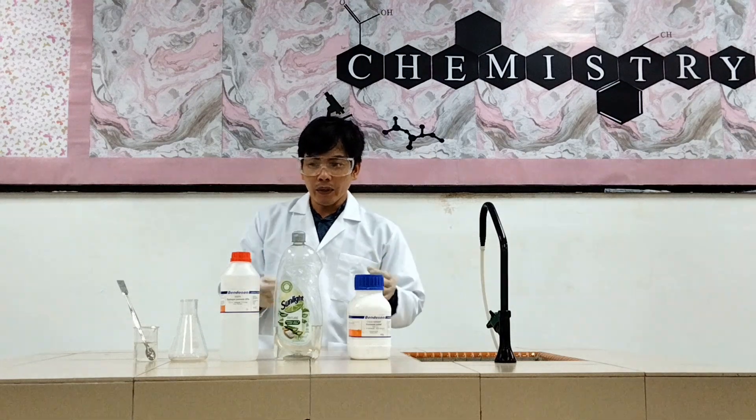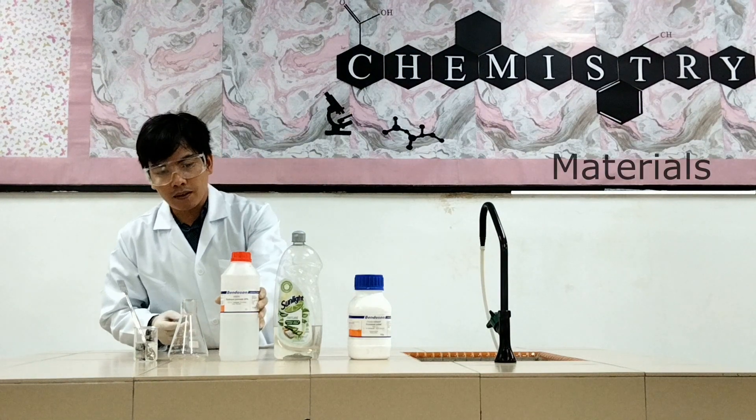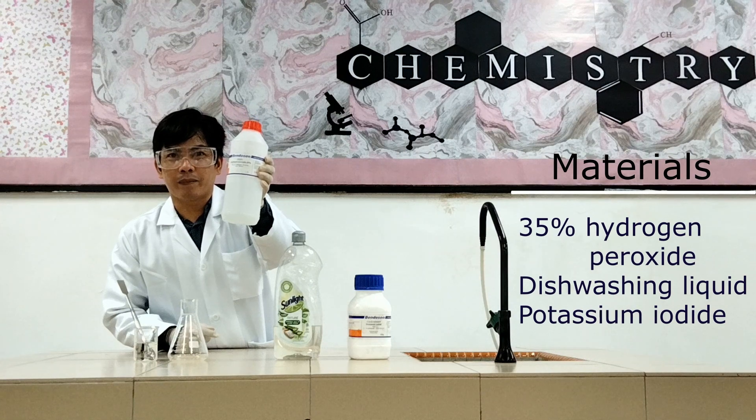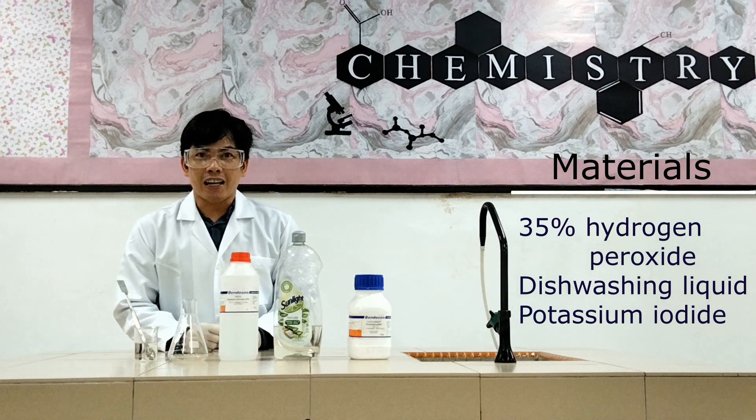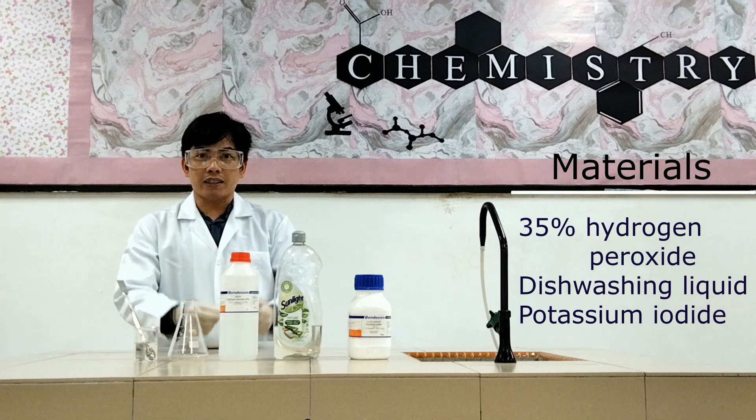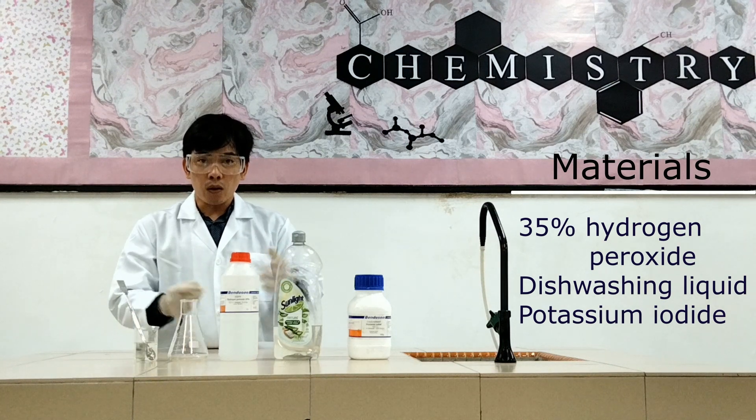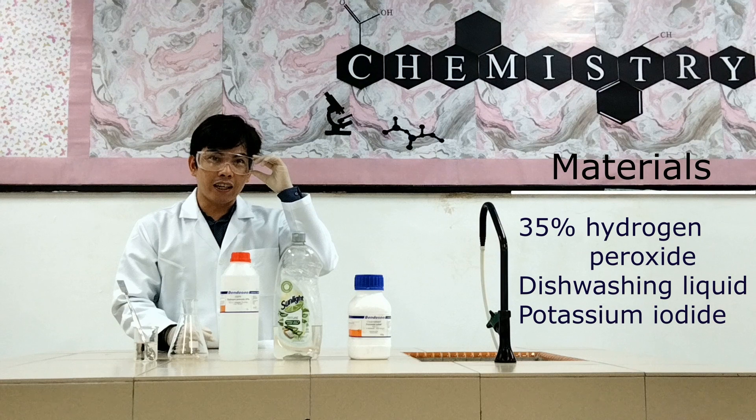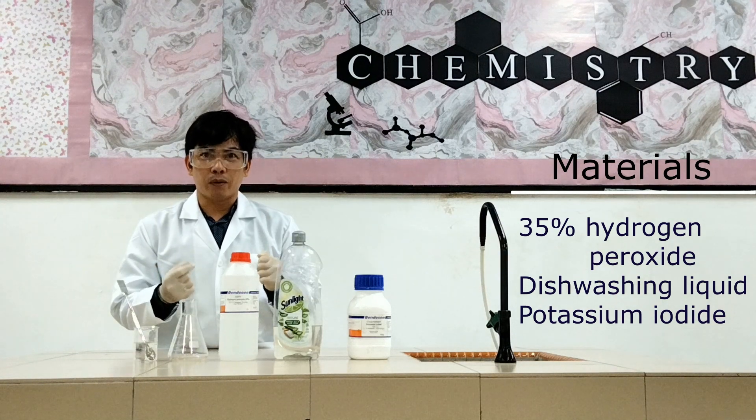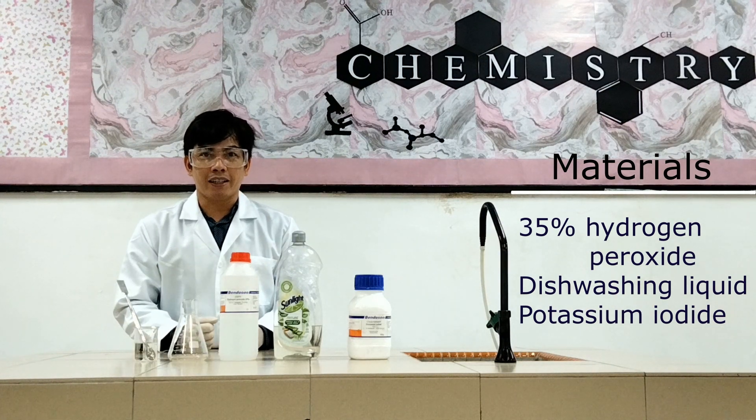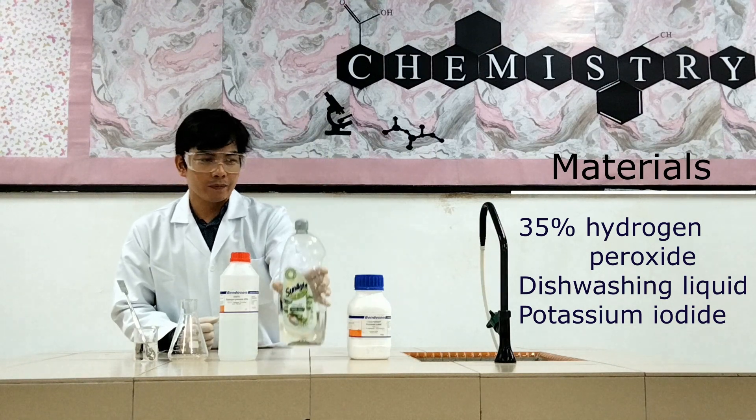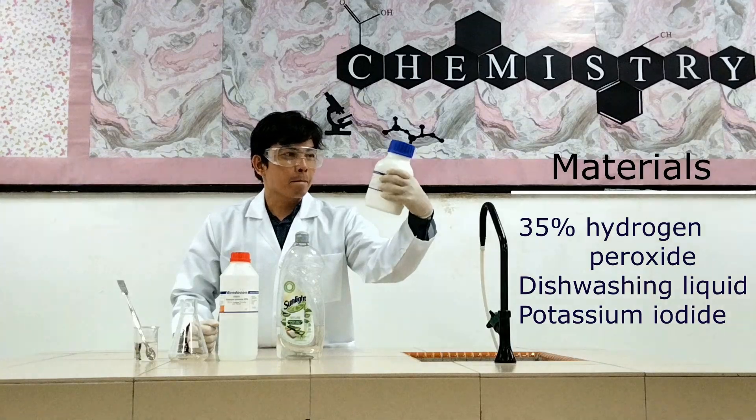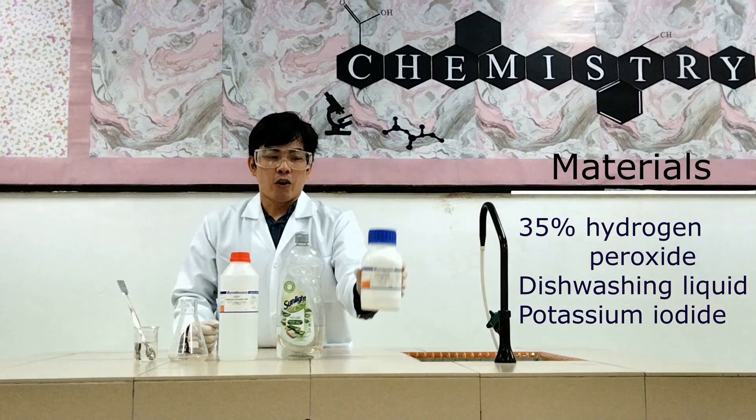So what we need for this experiment first is hydrogen peroxide. The one that we are going to use here is 35% hydrogen peroxide. It's a bit toxic, that's why we are going to use safety goggles and gloves while conducting this experiment. Then, we need dishwashing liquid and potassium iodide.